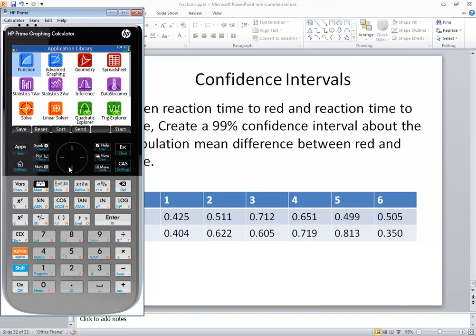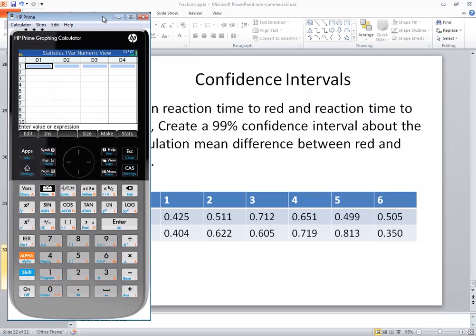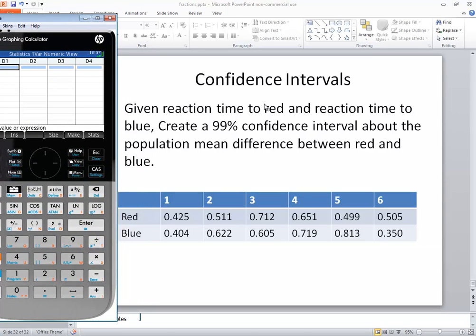Let's go into statistics 1var and press enter on it. In D1, we're going to put in our red values. And the reason why is because it says the population mean difference between red and blue. Red comes first here, so red is what we're going to put first. You have to read your problem to see what it's asking. If it said difference between blue and red, we would have put blue in D1.